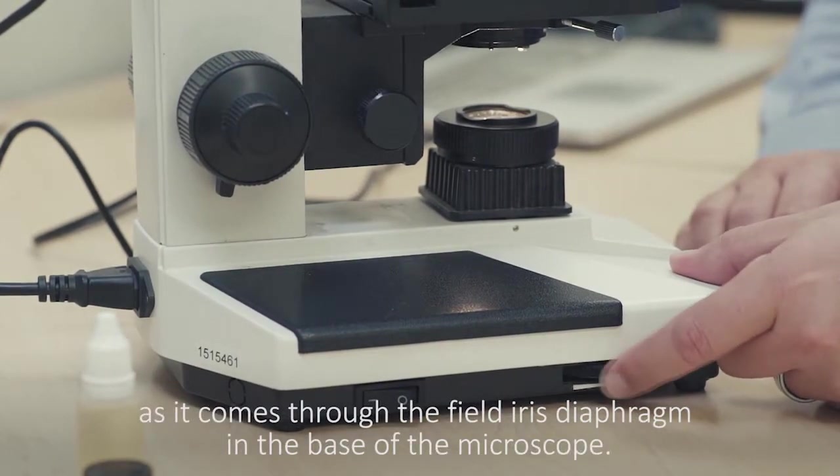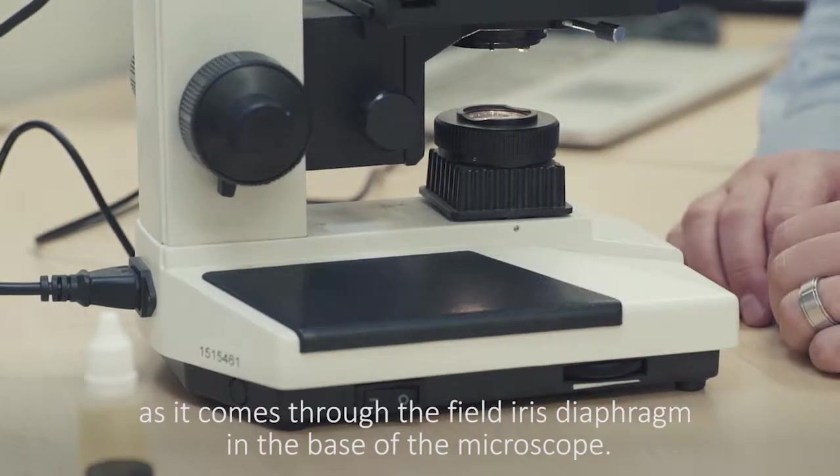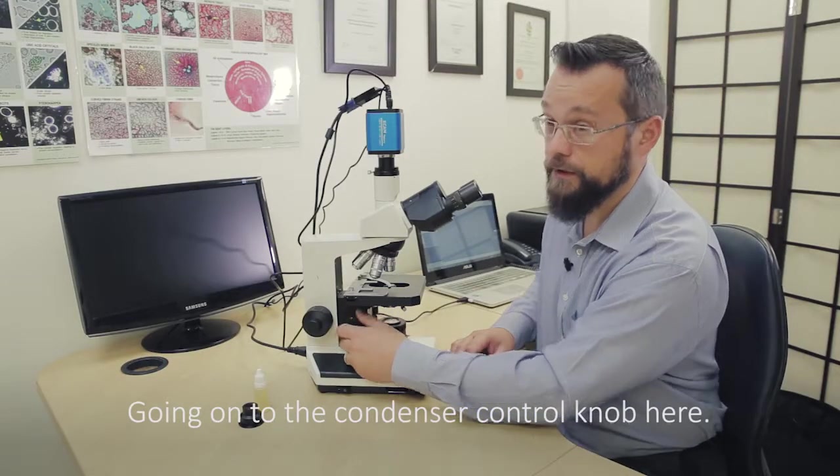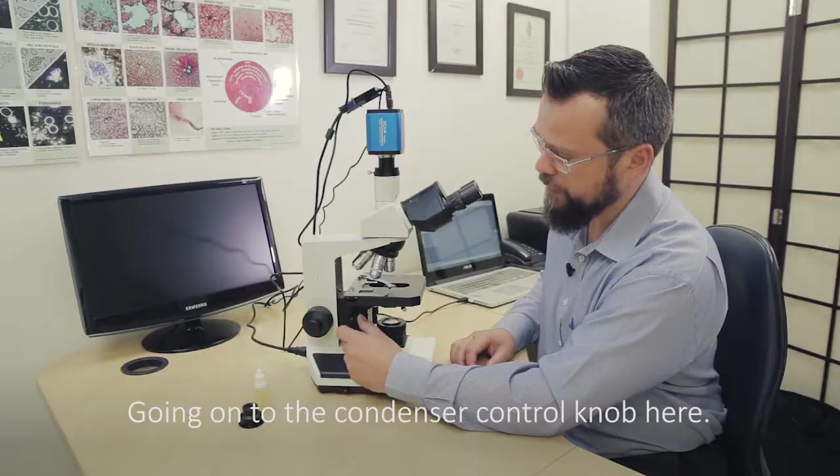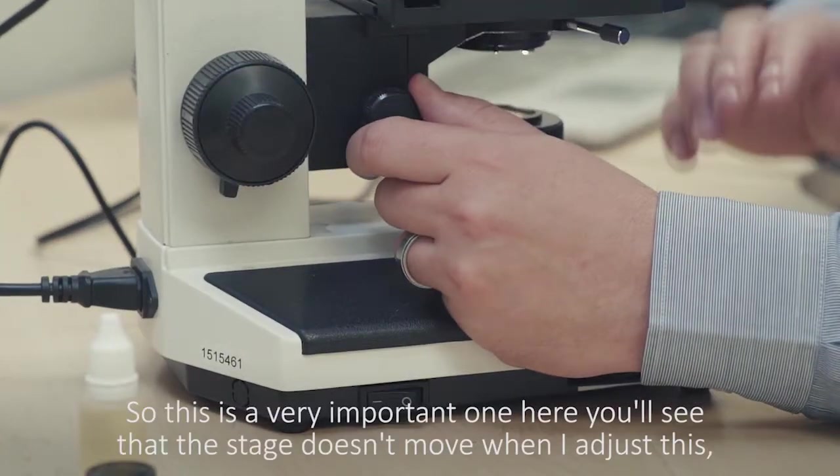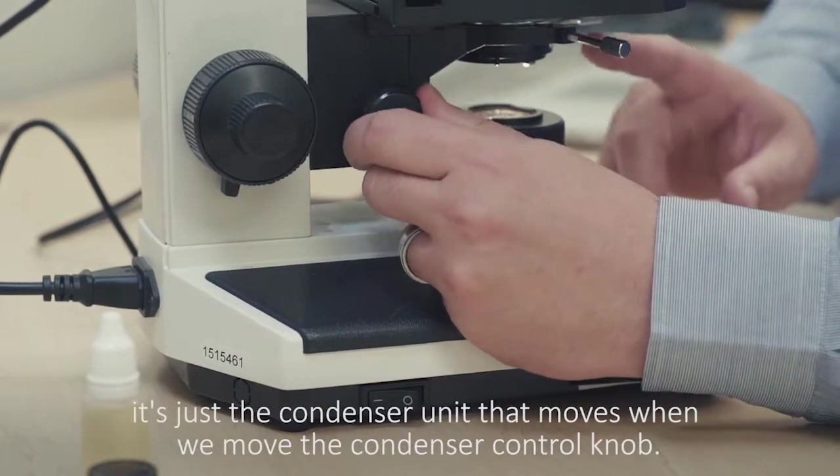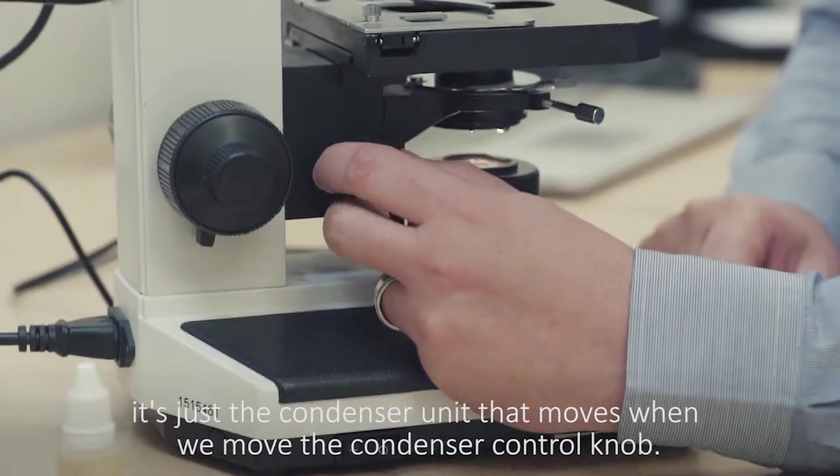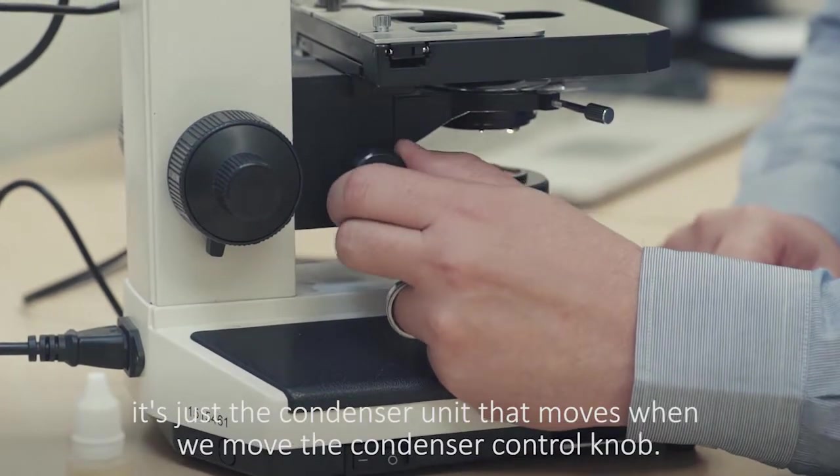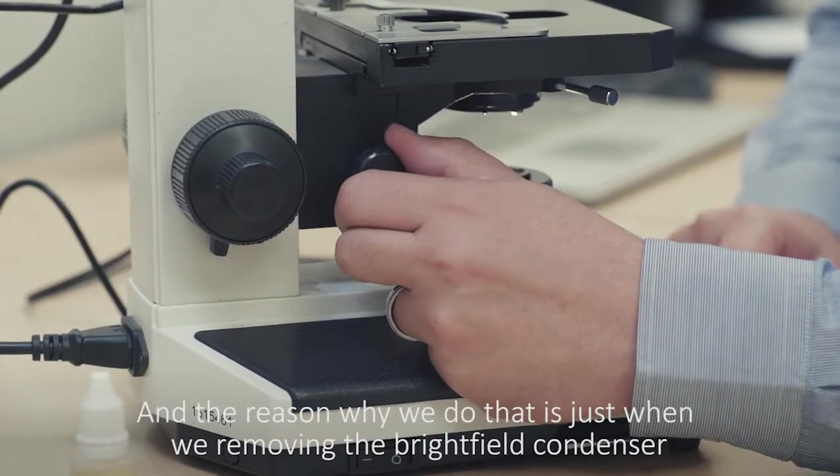Going on to the condenser control knob here, this is very important. You'll see that the stage doesn't move when I adjust this. It's just the condenser unit that moves when we move the condenser control knob. The reason we do that is when we're removing the brightfield condenser and placing the darkfield condenser into place under the stage.